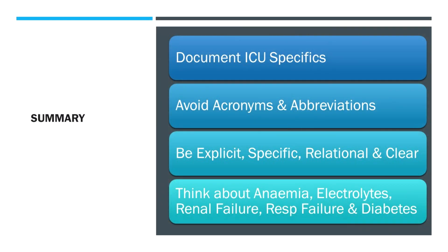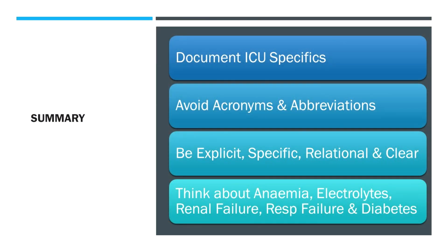In summary, today we've covered some specifics around intensive care. Probably the biggest thing is trying to avoid multi-organ failure as a term — instead, specify what the organ failure is, subtype it, and name the interventions associated. Avoid acronyms and abbreviations — you can use your electronic medical record to automate that so you don't have to change most of your habits. Apply the principles of being explicit, being specific, relating conditions to each other and to interventions, and being really clear by avoiding those acronyms and abbreviations.